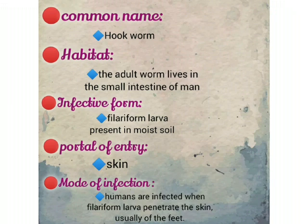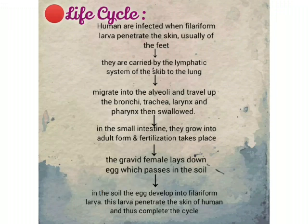Ankylostoma duodenale — hookworm. Infective form: filariform larvae present in moist soil. Portal of entry: skin. Mode of infection: humans are infected when the filariform larvae penetrate the skin, usually of the feet. Life cycle: when filariform larvae penetrate the skin of the feet, they are carried by the lymphatic system to the lungs and migrate into the alveoli.